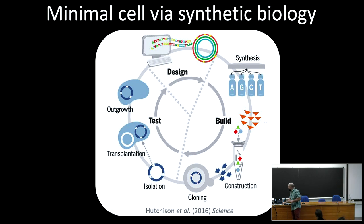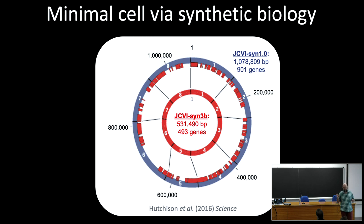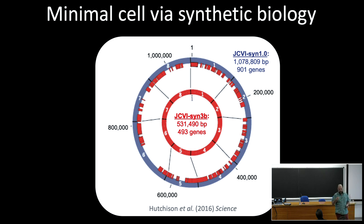Around 2018, I was at a Gordon conference in New England where Clyde Hutchinson, the lead author on this work, gave a talk. They had used global transposon mutagenesis to knock out, one at a time, every single gene in a wild-type organism that had approximately one million base pairs and 901 total genes. They would score whether or not that mutant was viable. If the mutation in one of the 901 genes prevented colony formation, that gene was determined to be essential. If you deleted another gene and the colony still formed, that was a non-essential mutation and could be removed.